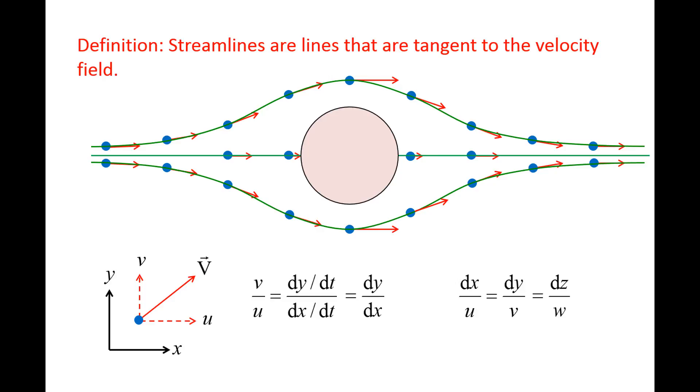If the flow is steady, that is the velocity at all locations in space does not change in time, the streamlines will be constant in time. If the flow is unsteady, the streamlines will change in time.